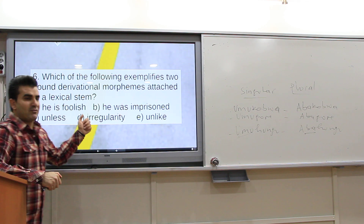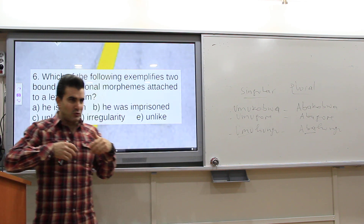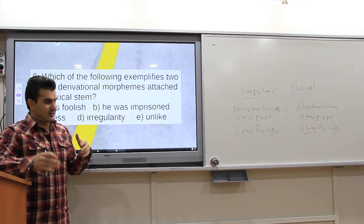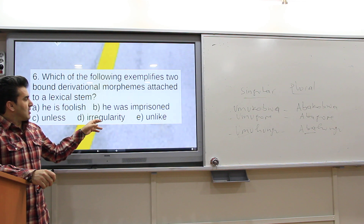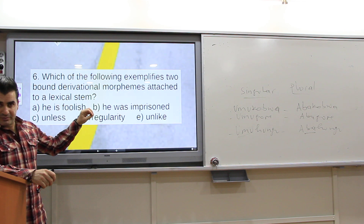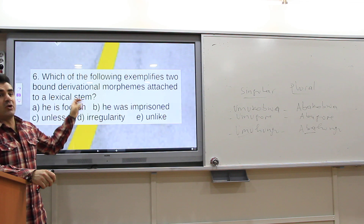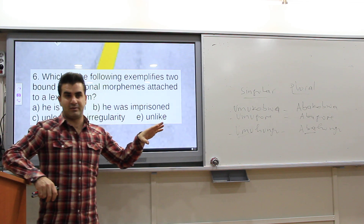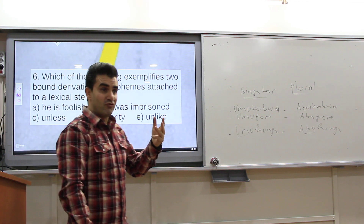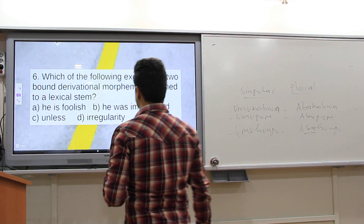Irregularity actually has three bound morphemes. It comes from the word 'regulate.' Then you get 'regular,' then 'irregular,' then 'irregularity' — three bound morphemes, multiple morphemes.